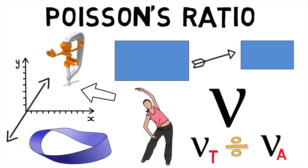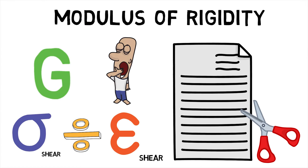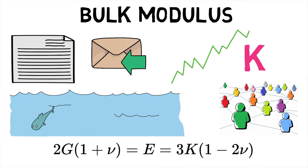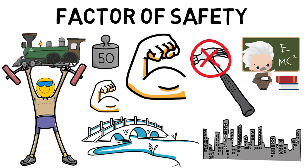Hence, we first saw what Poisson's ratio is, then moved to what modulus of rigidity and bulk modulus are, and then finally saw what the factor of safety is.